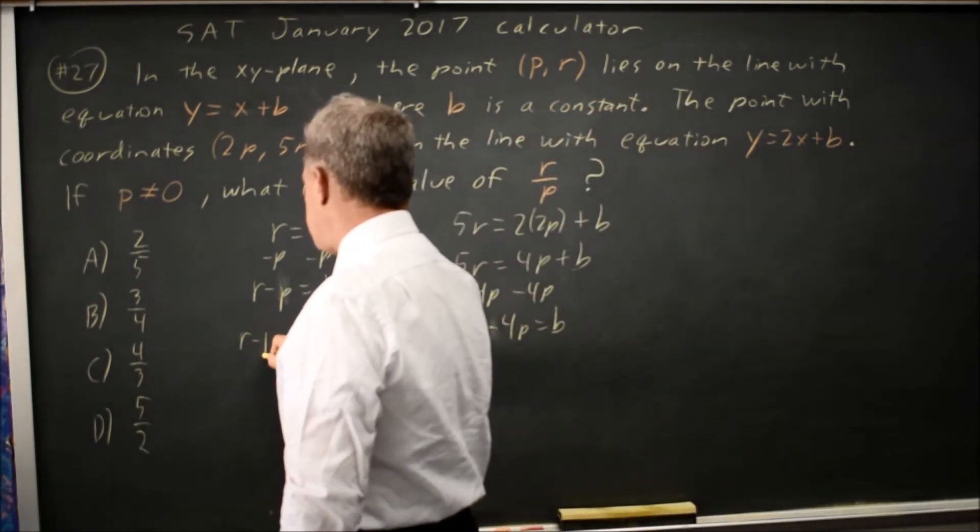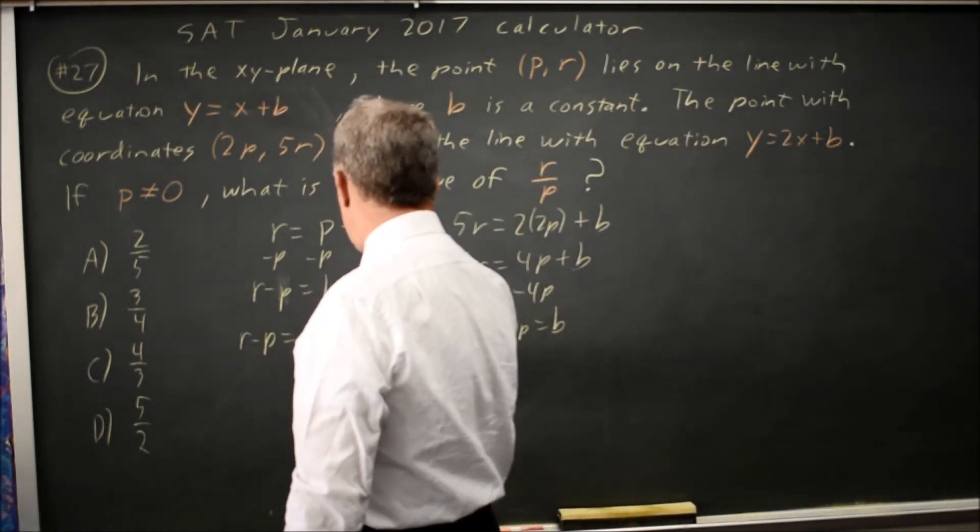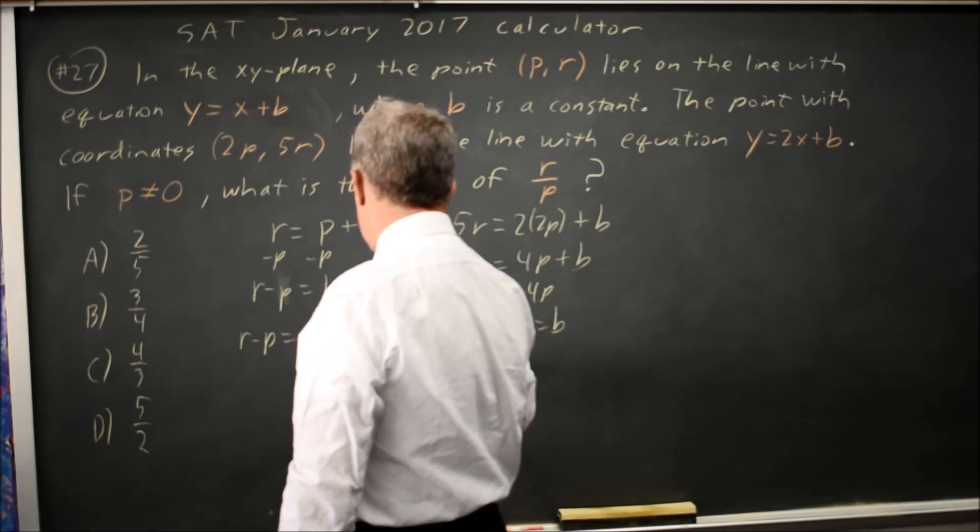These two expressions are both equal to b, so they're equal to each other. Therefore, r minus p is equal to 5r minus 4p.